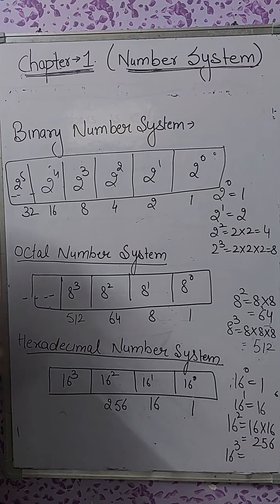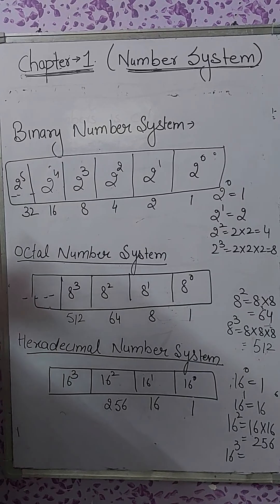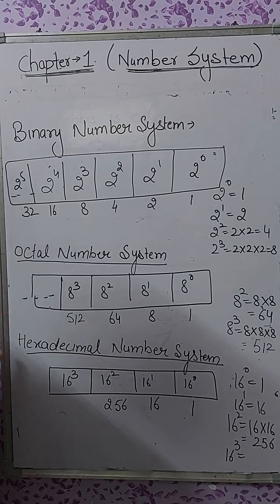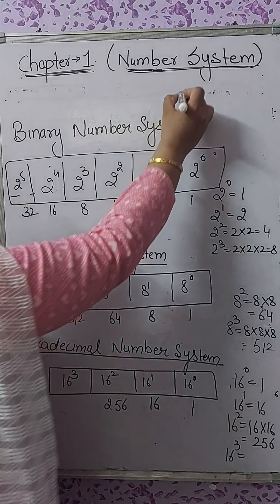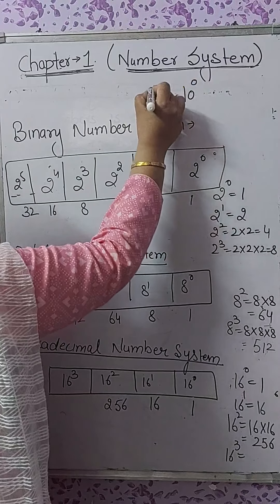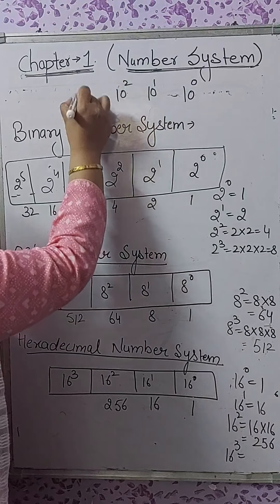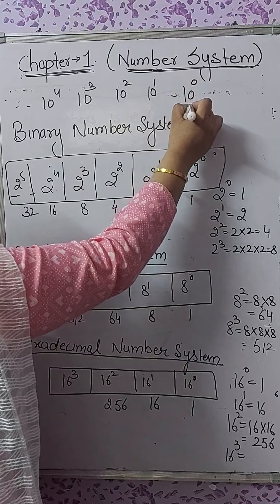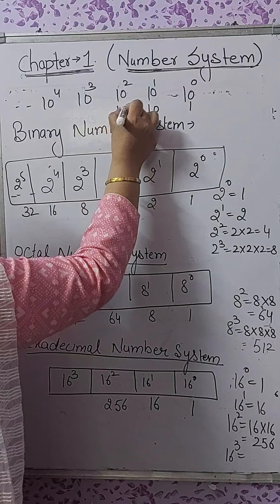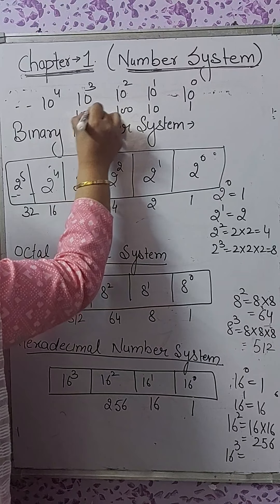Just as we discussed, the decimal number system is a positional number system. Similarly, the binary, octal, and hexadecimal number systems are also positional number systems, but they have different positional values. In the decimal number system, the base is 10, so its positional values are 10 raised to the power 0, 10 raised to the power 1, 10 raised to the power 2, 3, 4, and so on — meaning 1's place, 10's place, 100's place, 1000's place, 10,000's place.